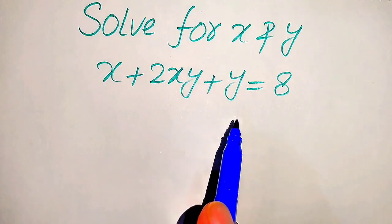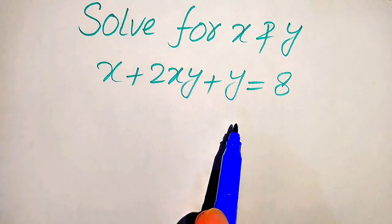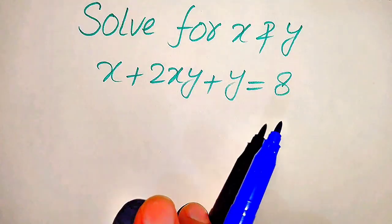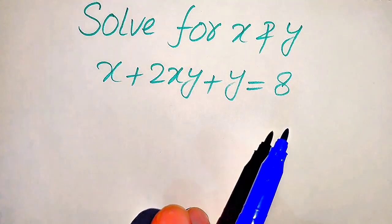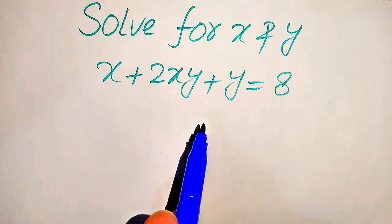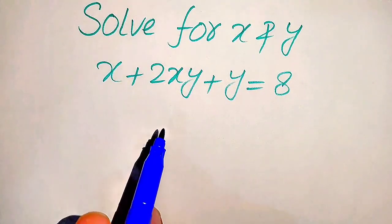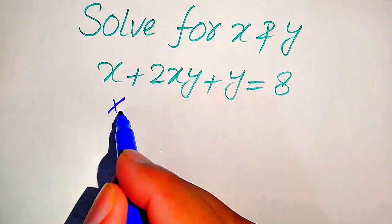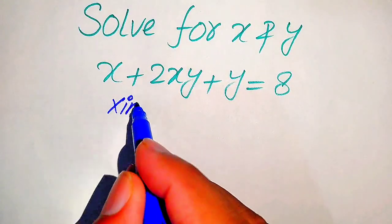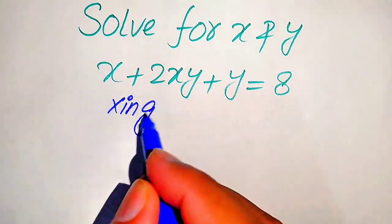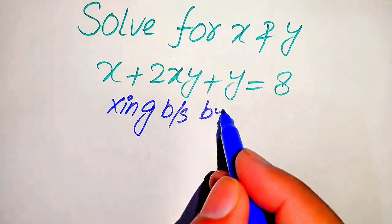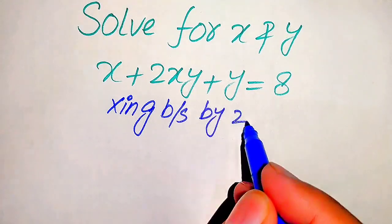Here we have a two-variable equation, so we need to find both of these variables. The very first thing we are going to do is make the factors of the left hand side. In order to do that, we need to multiply both sides by 2.